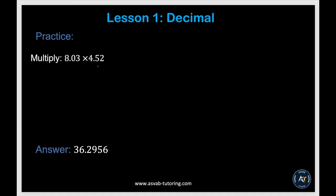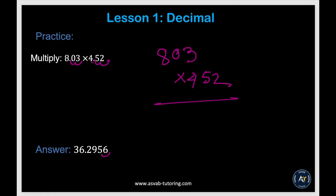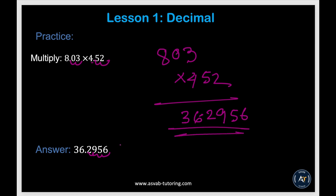Try this yourself: multiply as whole numbers — 803 times 452. Count the decimal places in the original problem: 1, 2, 3, 4 — you have 4 decimal places total. Multiply to get 362,956, then place the decimal 4 digits from the right: 36.2956. This is the trick to apply for decimal multiplication.